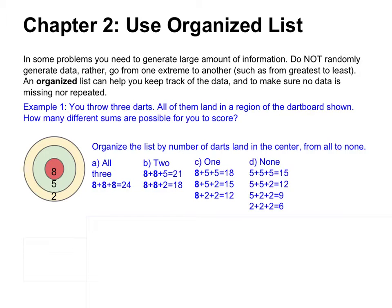This is what you get after you generate the data. If all 3 land in the best region, your score is 24. If only 2 land in the best region, the third can land in 5, making the total 21, or land in 2, making the total 18. Even when listing like this, make sure you also go from one extreme to another — list from the better score to the worst score.